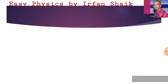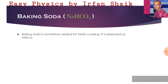Let us discuss about another salt — baking soda. The formula of baking soda is NaHCO3. It is sometimes added for faster cooking. It is prepared as follows: sodium chloride, water, carbon dioxide, and ammonia react to give ammonium chloride and baking soda, that is NaHCO3.